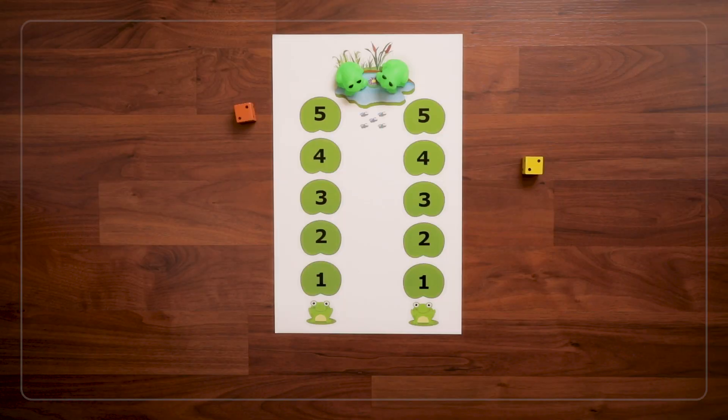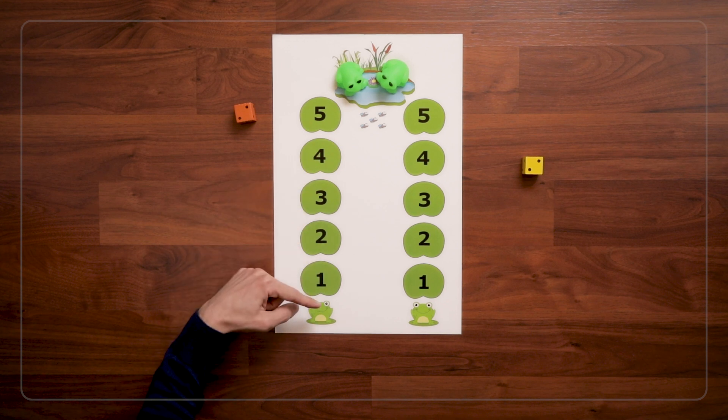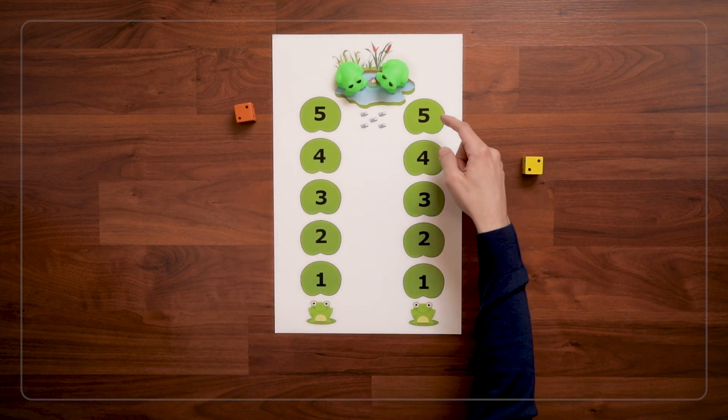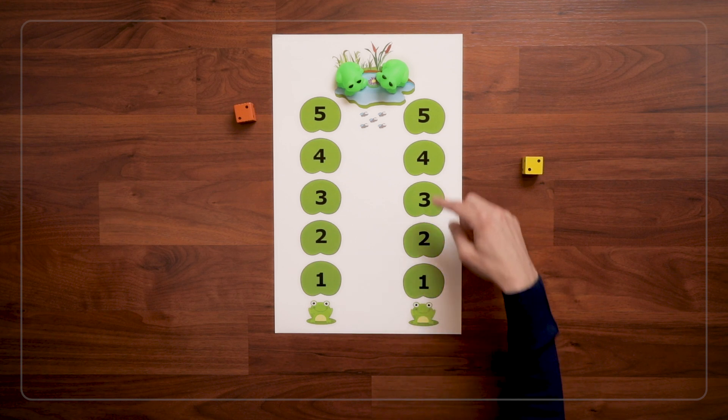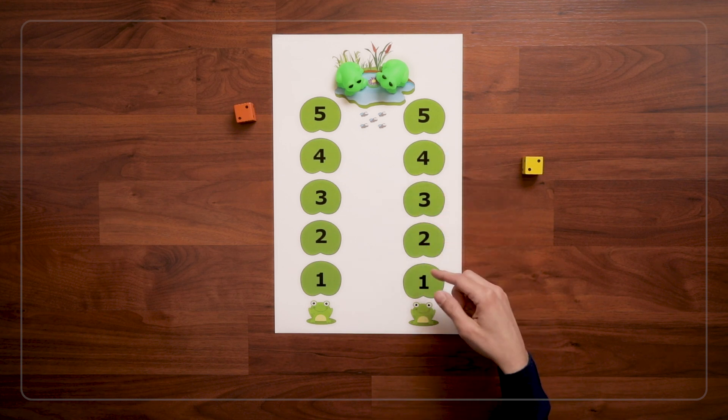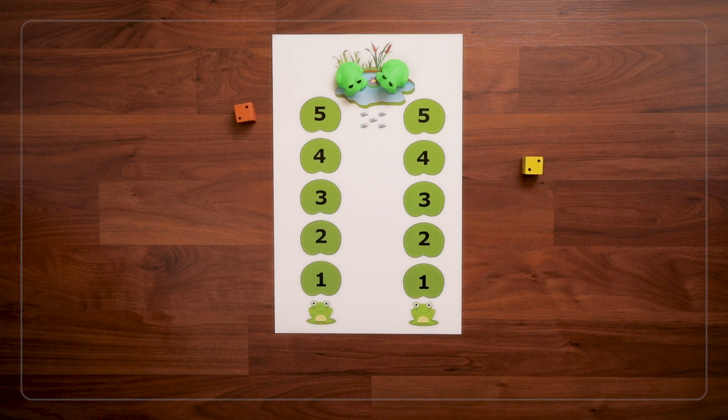Then after the frogs swim around for a bit, you can roll to have them hop back home. And the hopping back is really great too because children are seeing how the numbers go backward in order. And kids need lots and lots of practice with number order both forward and backward on the number path.